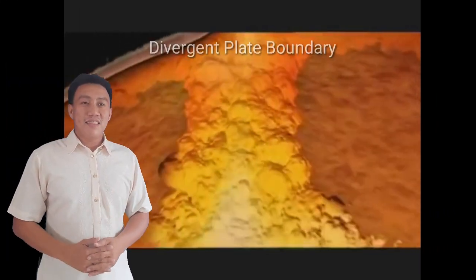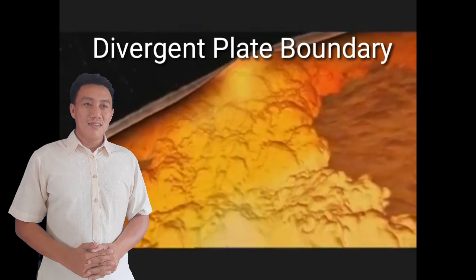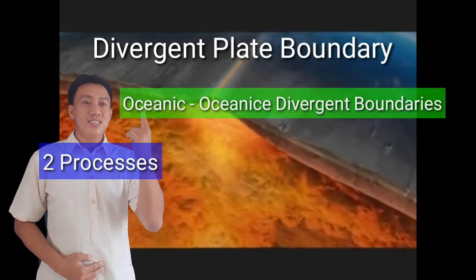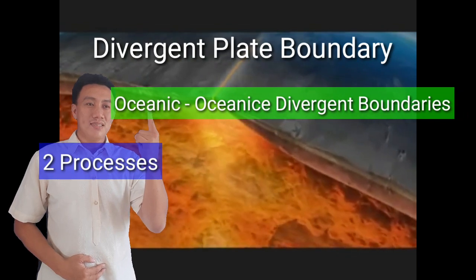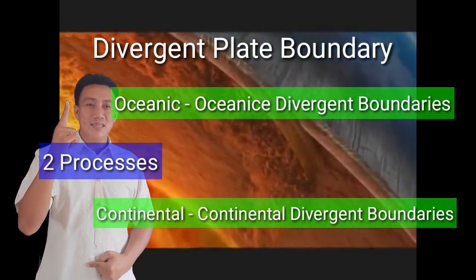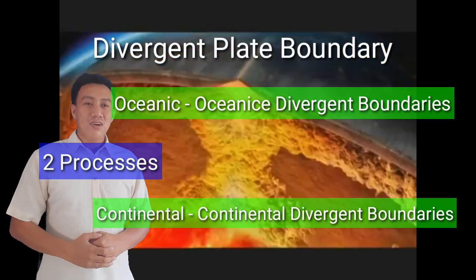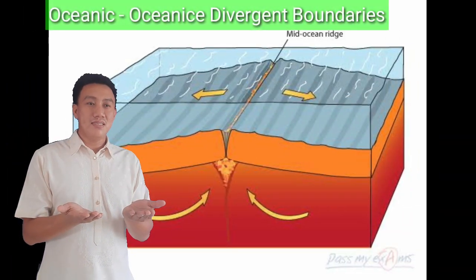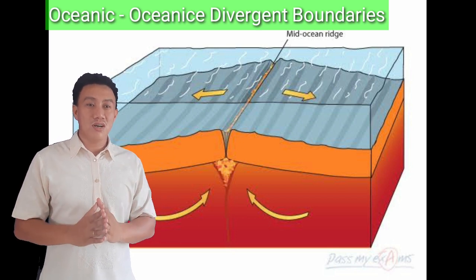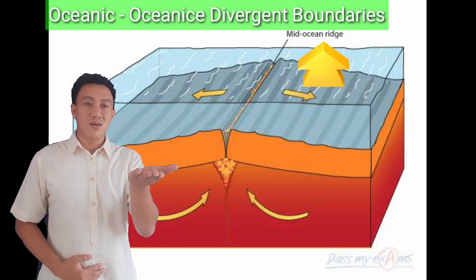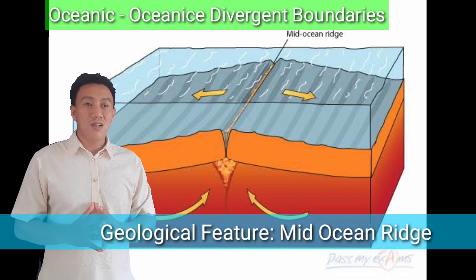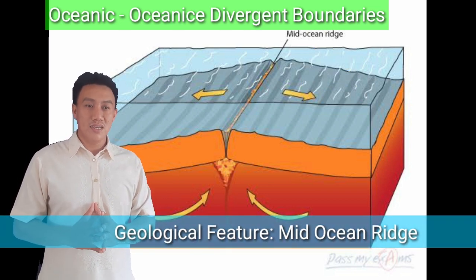Let's go now to the divergent plate boundary. There are two processes happening: the diverging of two oceanic plates and the diverging of two continental plates. In the diverging of two oceanic plates, when they separate, it will result in the formation of an ocean ridge, or what we call the mid-ocean ridge. This is the geological feature of this process.